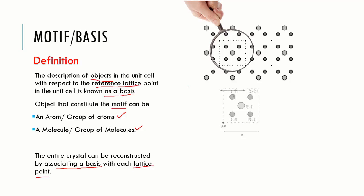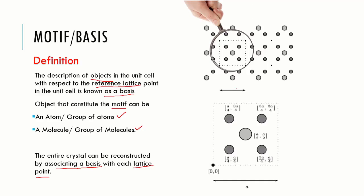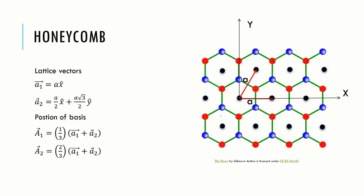The entire crystal can be reconstructed by associating a basis with each lattice point. For example, consider the primitive unit cell of its lattice. This unit cell contains five objects. Position of each object is described with respect to the lattice point at the corner of the unit cell.